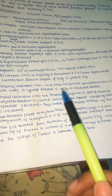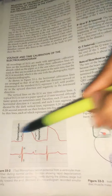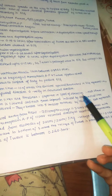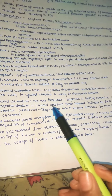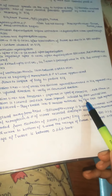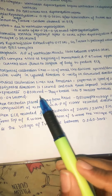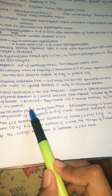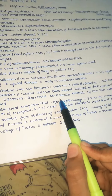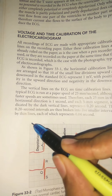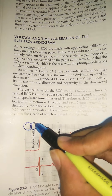The ECG paper runs at a speed of 25 millimeters per second. Each 25 millimeters in the horizontal direction equals one second. Each 5-millimeter segment, indicated by dark vertical lines, represents 0.20 seconds. These are further broken into five smaller intervals by thin lines, each representing 0.04 seconds. Remembering these time values makes it easier to calculate ECG-related measurements.